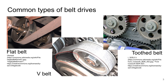What you see before you are some common types of belt drives. The first type on the left is the flat belt. A flat belt is the simplest type of belt drive because the belt is simply a flat piece of material that engages with a cylindrical pulley. Because of its simplicity, it is relatively easy to manufacture and therefore relatively cheap.